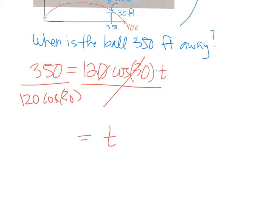So putting that in my calculator: 350 divided by 120 cosine of 30, making sure you're in degree mode. I get a t value of 3.37 seconds.